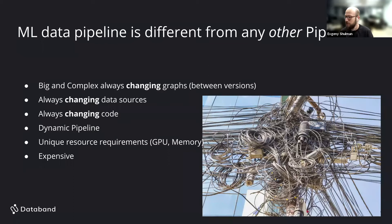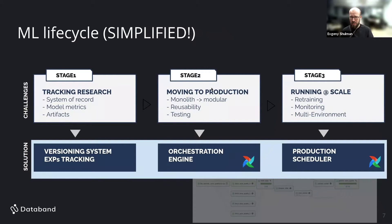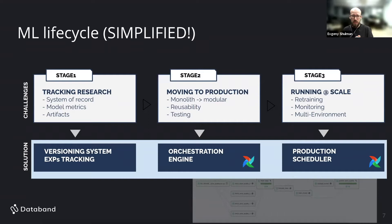ML pipelines also differ in their life cycle. Airflow is very focused on stage three — running pipelines at scale in production. But ML pipelines have many stages. Stage one: I write a script, use Jupyter notebooks, start very small, and focus on seeing my progress and the quality of my model — building a working POC.